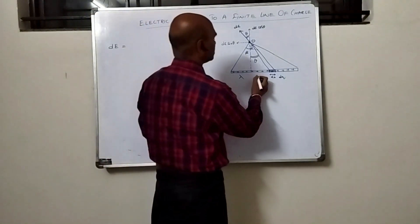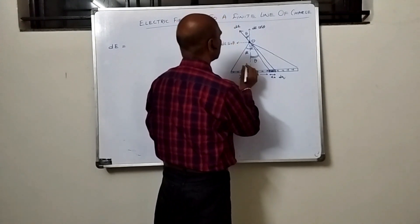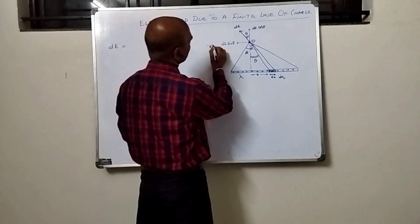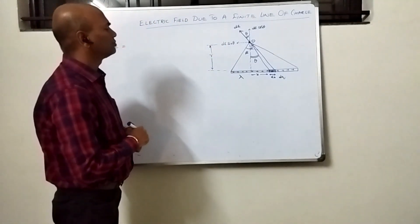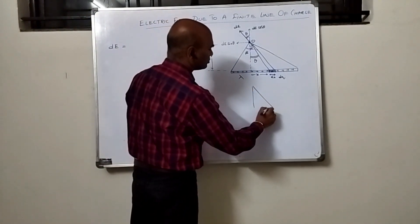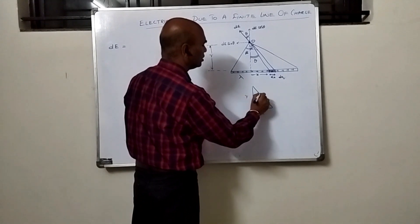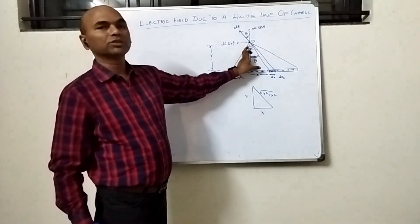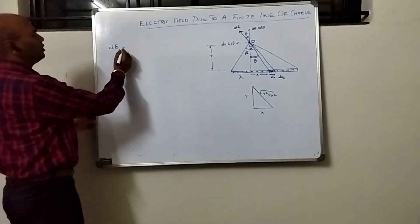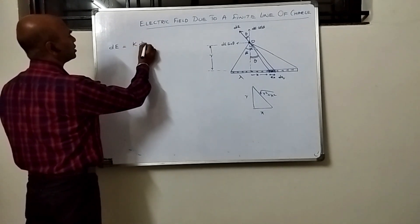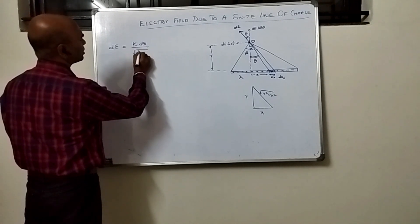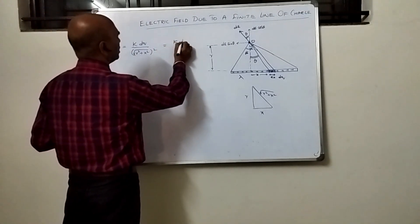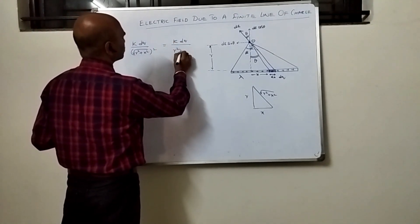Assuming the horizontal distance along the line is X and the perpendicular distance from the point to the line is R, we have a right triangle where the hypotenuse is root of R squared plus X squared. Therefore the electric field DE becomes K·DQ divided by (R squared plus X squared).